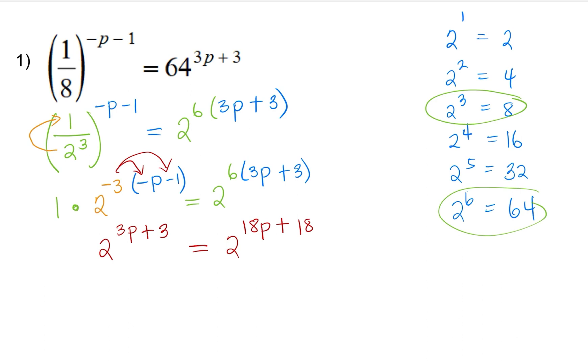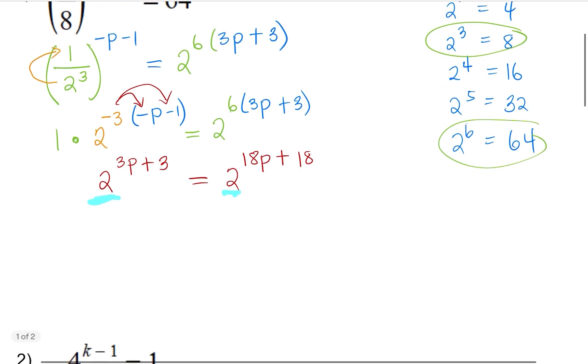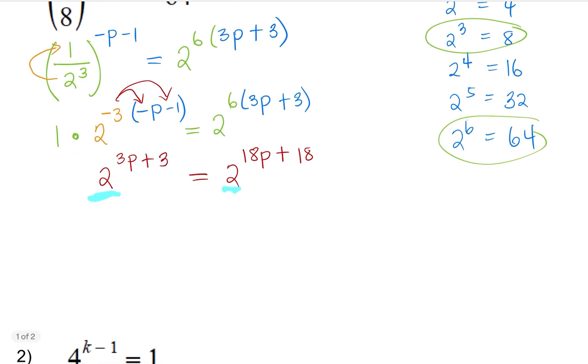So we would like to now focus on the exponents. So notice that the bases are already the same. So once the base is the same, we are going to focus on the exponents. We're going to equate 3p plus 3 equals 18p plus 18.